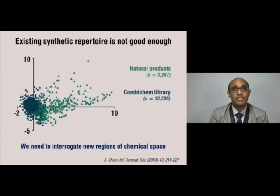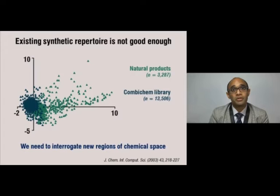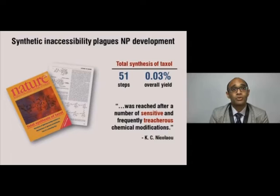The answer is quite simple: we need better technologies to access better chemical space so that we can target the undrugged protein domains in the human body. We need to look at more natural product-like molecules, but the industry continues to ignore this region of chemical space.